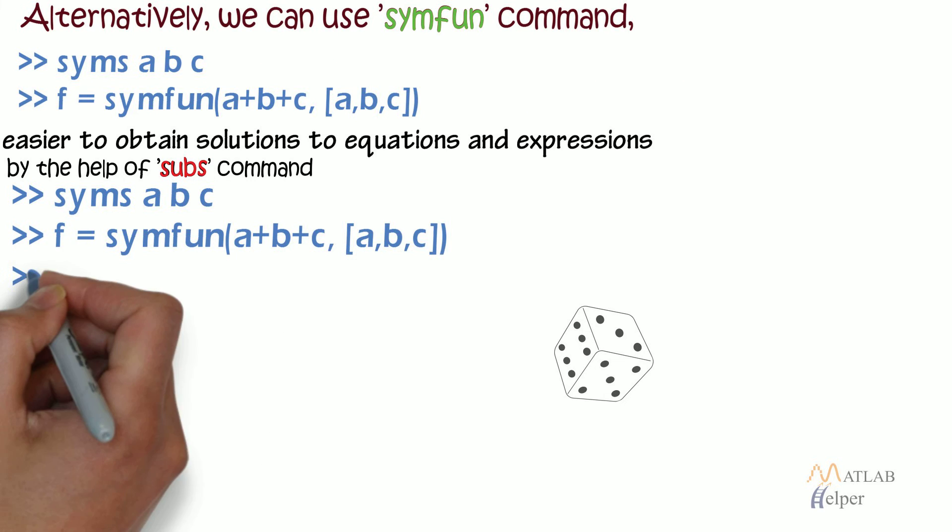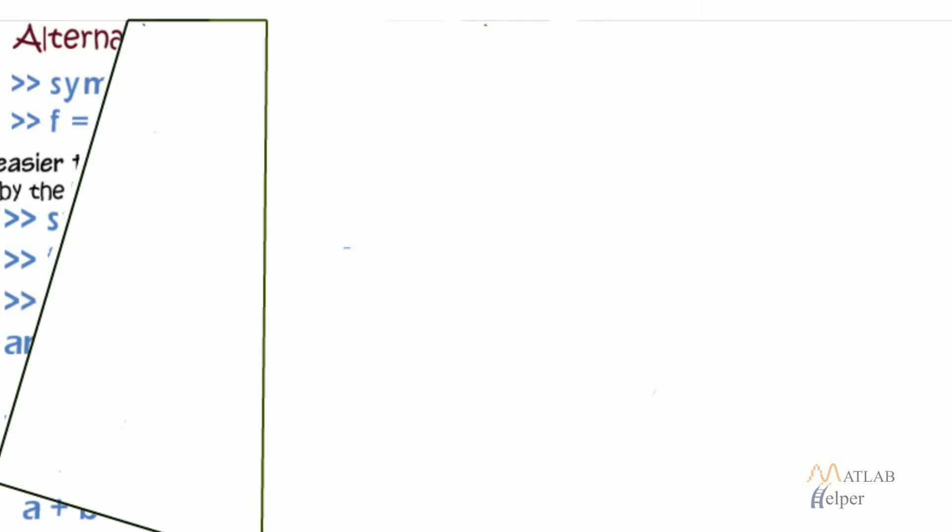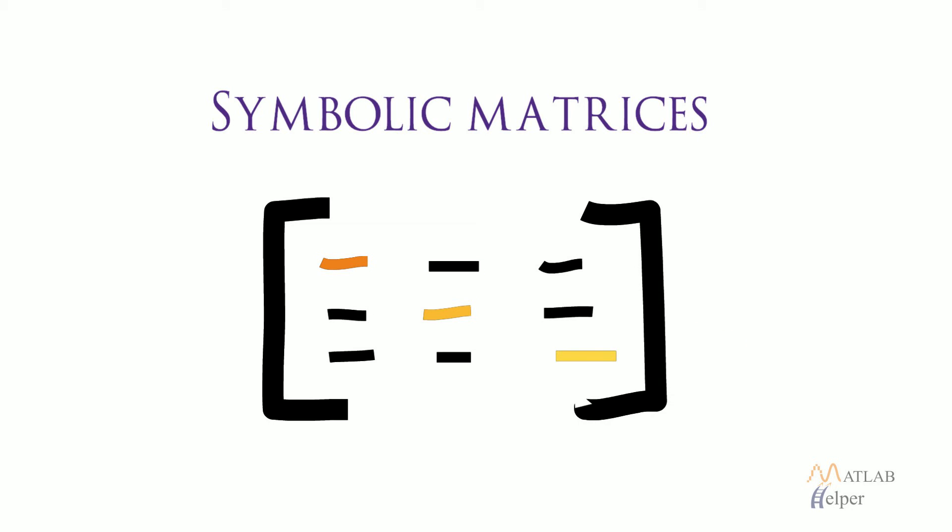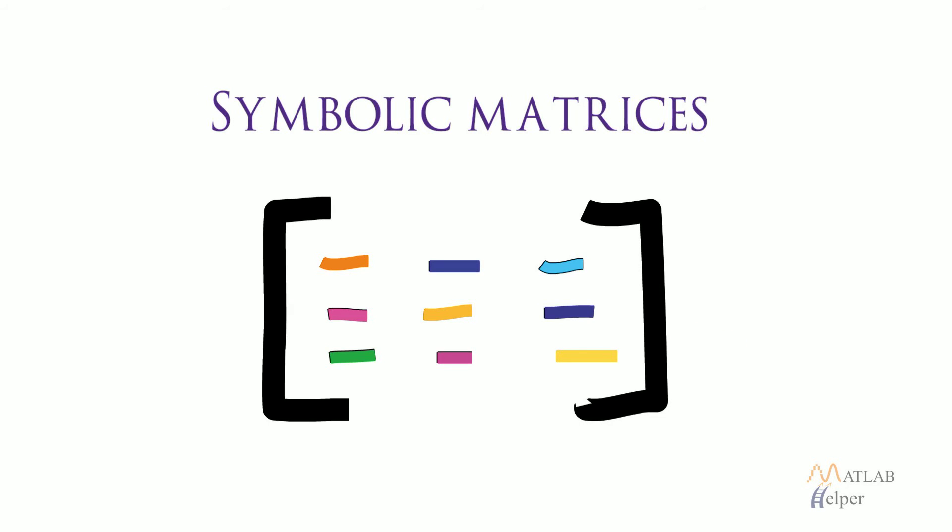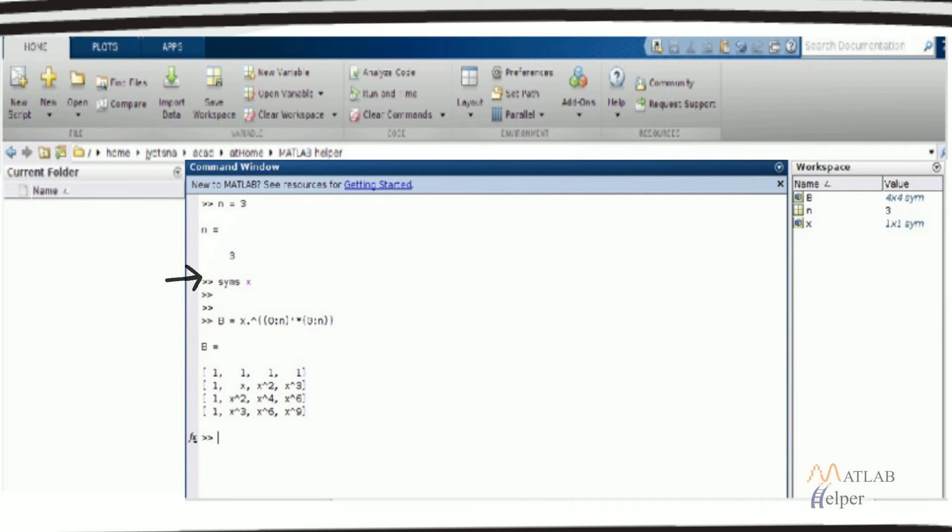This is made possible by the help of subs command which substitutes values into symbolic variables. By using vector and matrix notation, we can also create symbolic matrices out of symbolic objects as shown in the picture.